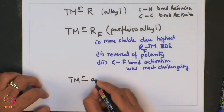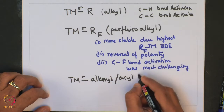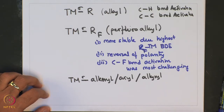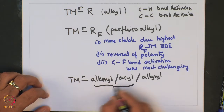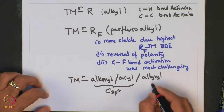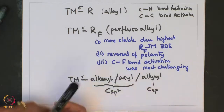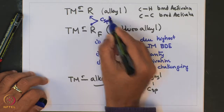In today's lecture, we are going to look into Transition Metal Sigma Aryl and Alkynyl type complexes. These are Transition Metal Complexes with CSP2 type hybridization, and for alkynyl, CSP type hybridization. Whereas for the ones studied so far, these had CSP3 type of hybridization.